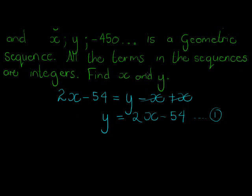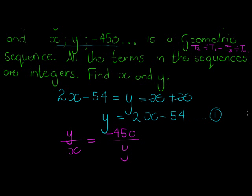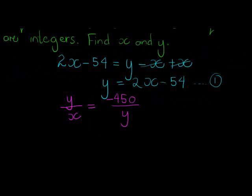Another equation is if I use this and the fact that it is a geometric sequence. Geometric sequence property is that term 2 divided by term 1 will give me the same answer as term 3 divided by term 2. So y divided by x is equal to -450 divided by y.